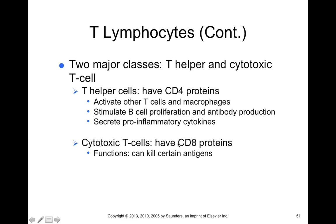Cytotoxic T cells are CD8 positive and function in killing cells that contain certain antigens. However, they require signals or cytokines from T helper cells in order to function normally. The CD4 and CD8 proteins are important for recognizing foreign antigens. Interestingly, HIV — human immunodeficiency virus — only infects cells that are CD4 positive, specifically the T helper cells.